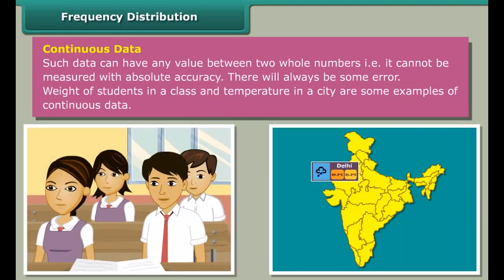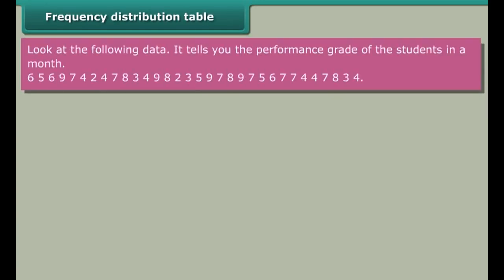Continuous data: Such data can have any value between two whole numbers, that is it can be measured with absolute accuracy. There will always be some error. Weight of students in a class and temperature in a city are some examples of continuous data.